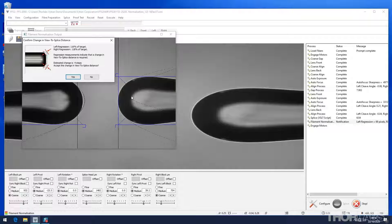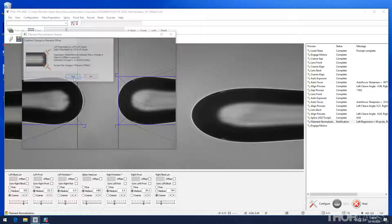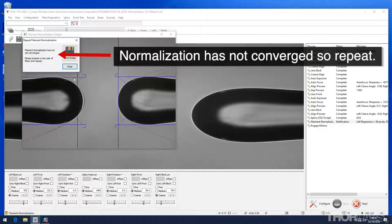Based on these measurements, the FFS3 software will recommend an adjustment to the view to splice distance and the filament power offset so that the filament provides the required heating effect. It may take a few iterations for the normalization process to converge.